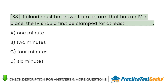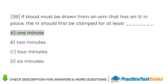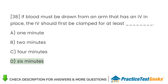If blood must be drawn from an arm that has an IV in place, the IV should first be clamped for at least A. One minute. B. Two minutes. C. Four minutes. D. Six minutes.